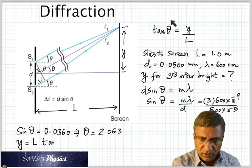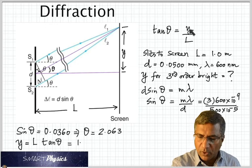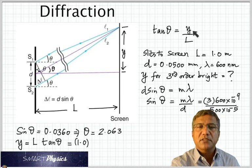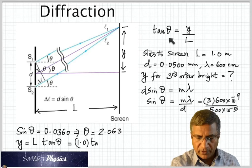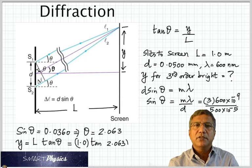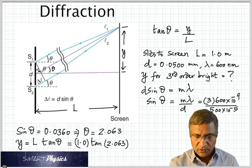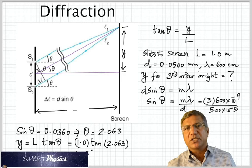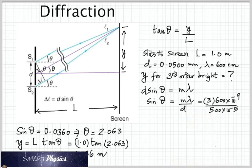Next, use this formula. Rearrange it to make Y the subject. It becomes L tan theta. L is the distance between the slits and the screen, which is 1 meter. So 1 times tan 2.063 gives 0.036 meter.